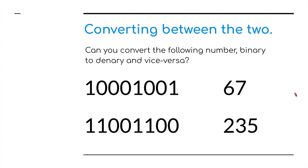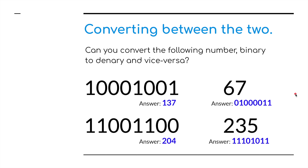Try both binary to denary and denary to binary conversions. The answers are: 137, 204, and then 01000011 — or 67 — and 235 is 11101011.